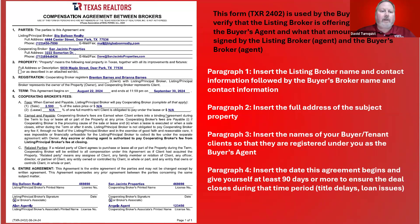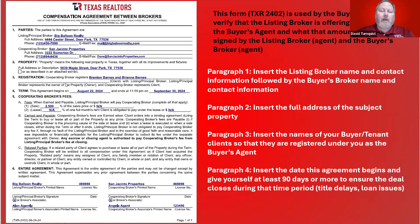You'll put the full address here — you could put the legal description as well, but it's not really necessary as long as you have the correct address and the zip code. You're going to register your clients to make sure that you show that you are the procuring cause — that you are the one that took them to the home to see it, and that you have a buyer's representation agreement with them. That's very important. Remember, you cannot show a house as a buyer's agent without having a buyer's rep agreement in place. Here I'm registering Brenton Barnes and Brianna Barnes.